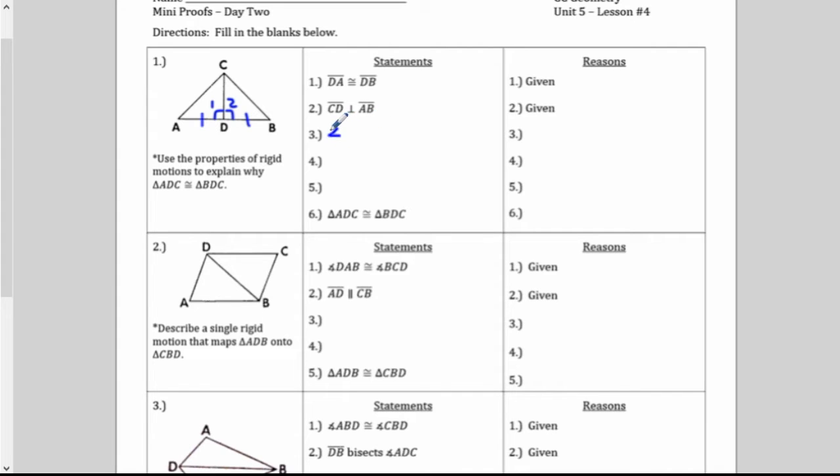Okay, so first you actually have to state that you have right angles. So we'll say angle one and angle two are right angles. Now, where did we get that from? How did we know that? Well, we knew it from the given. Step two told us that we had perpendicular lines. And the definition of perpendicular lines is that you get right angles.